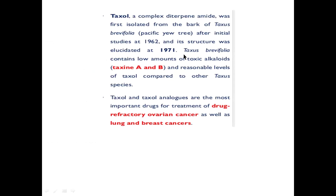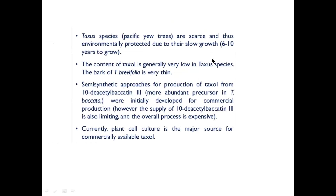Taxus species generally contain very low amounts of the alkaloid, and since Taxol is the most important drug for cancer treatment, it is now produced in tissue culture. Taxus species are also very few in number and have a very slow growth rate, making in vitro cultivation essential. Semi-synthetic approaches are used: some Taxol is extracted from the plant, and some is produced in vitro. The precursor 10-deacetylbaccatin III — the most abundant precursor in Taxus baccata — is used for Taxol production.